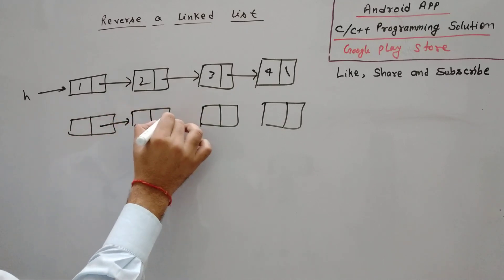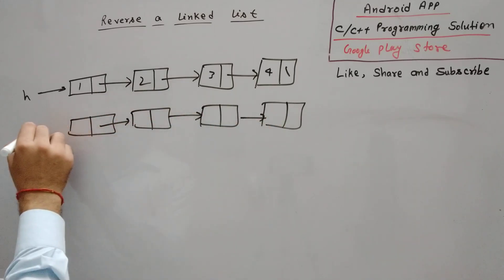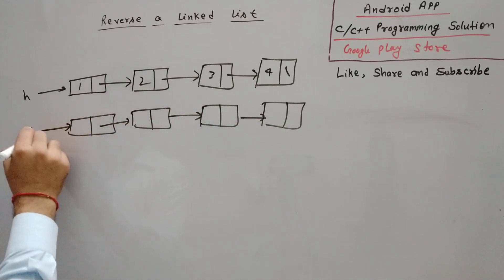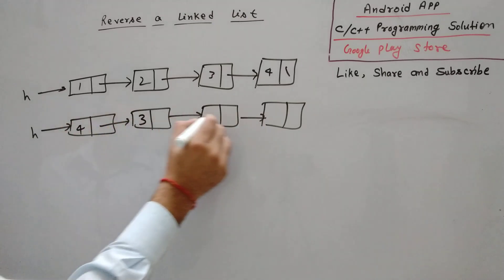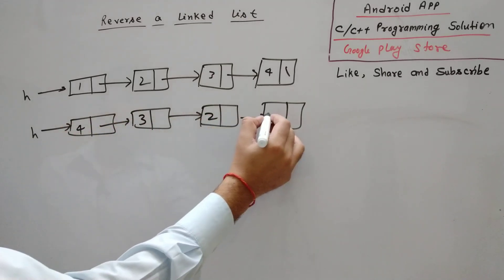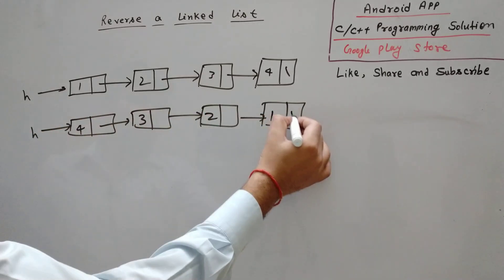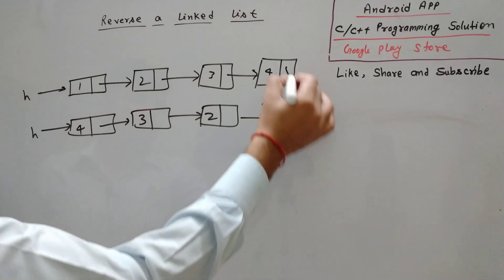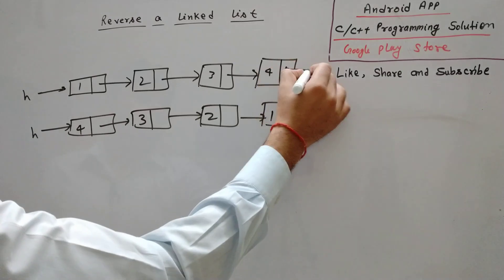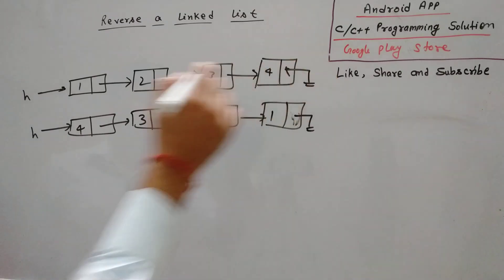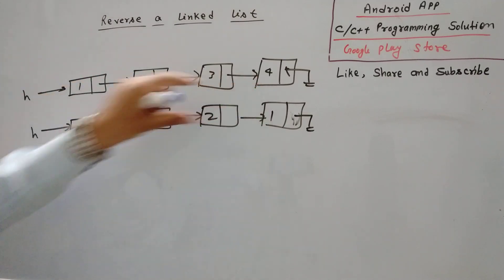The reversed list would look like this — head pointing to the node with data 4, 3, 2, 1, and here is null. So how do we reverse the linked list?